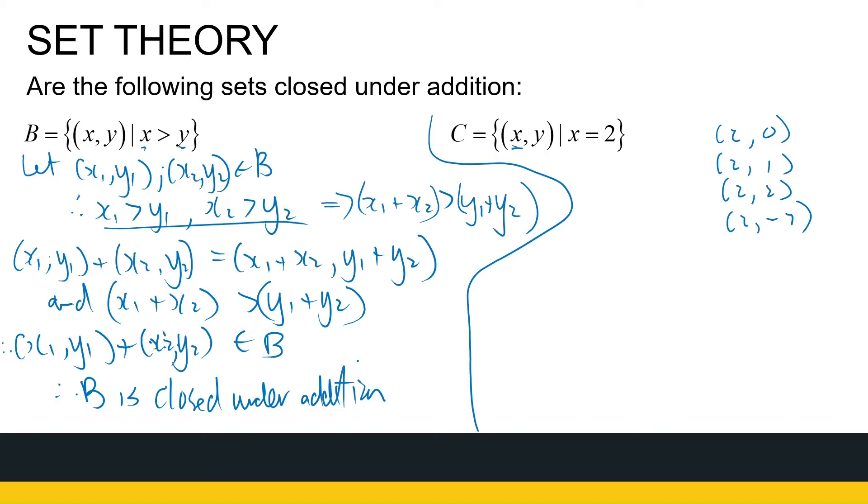So if I add any two of them together, will I again get an ordered pair where this first entry is 2? No, it's going to be 4 every time. So that one is not closed under addition. How am I going to show that? I'm going to say, so this was just my thinking on the side. Now I'm saying, well,